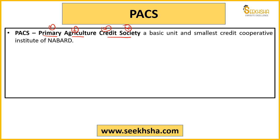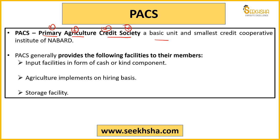PACS basic unit mein aata hai — smallest credit cooperative institute of NABARD. Iski main facilities: cash ki form mein small loans provide kar sakta hai. Uske alawa, small farmers ko agricultural implements provide karne mein help karta hai, hiring basis ke upar jo purchase nahi kar sakti. Storage facilities bhi provide karne mein help karta hai. Yeh primary responsibilities hain Primary Agricultural Credit Societies ki.